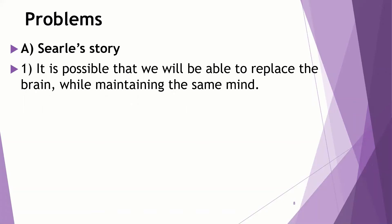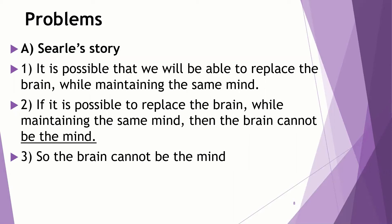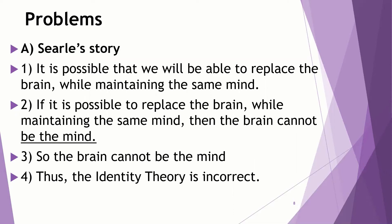That's the problem. To put it into an argument: it is possible that we will be able to replace the brain while maintaining the same mind — that's what happened with the person who initially had problems with the optic nerve. But if it is possible to replace the brain while maintaining the same mind, then the brain cannot possibly be the mind. They cannot be the same thing if you end up with the mind but without the brain. So the brain simply cannot be the mind, which means the identity theory is incorrect.